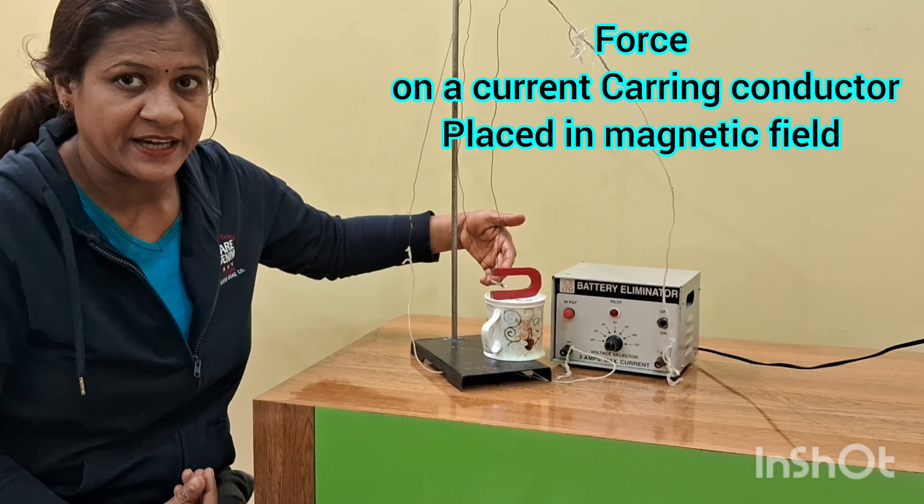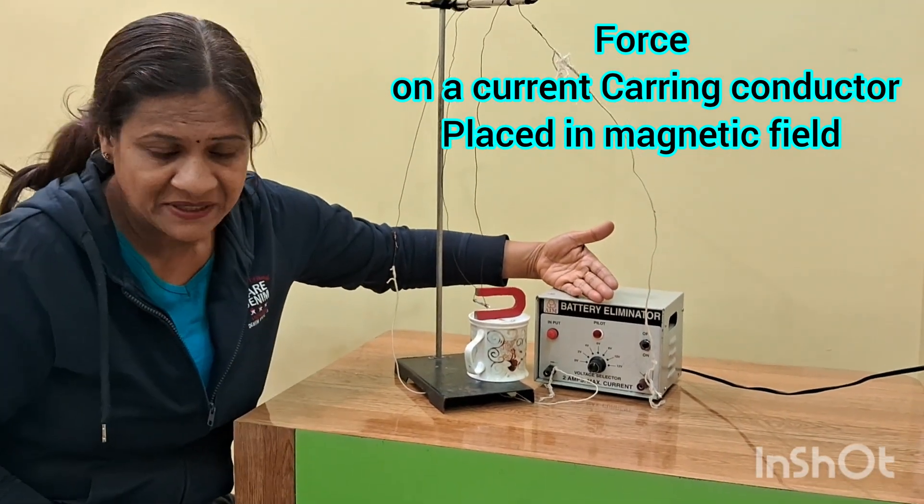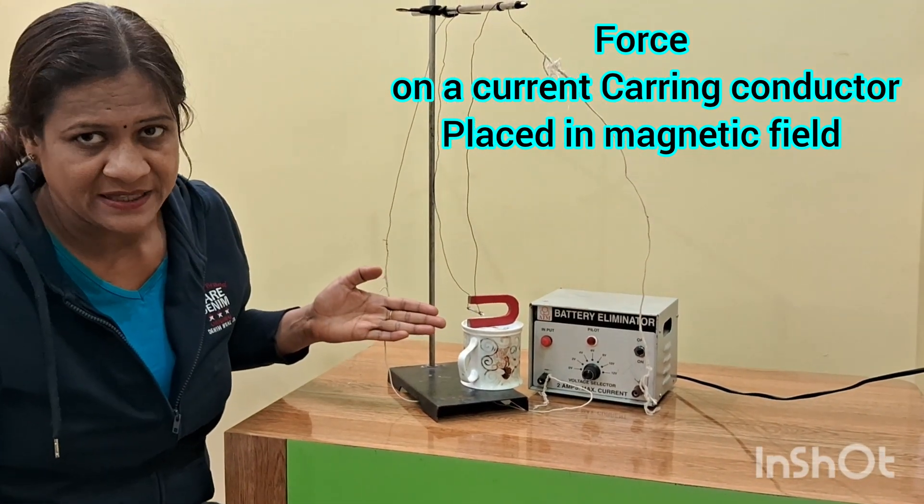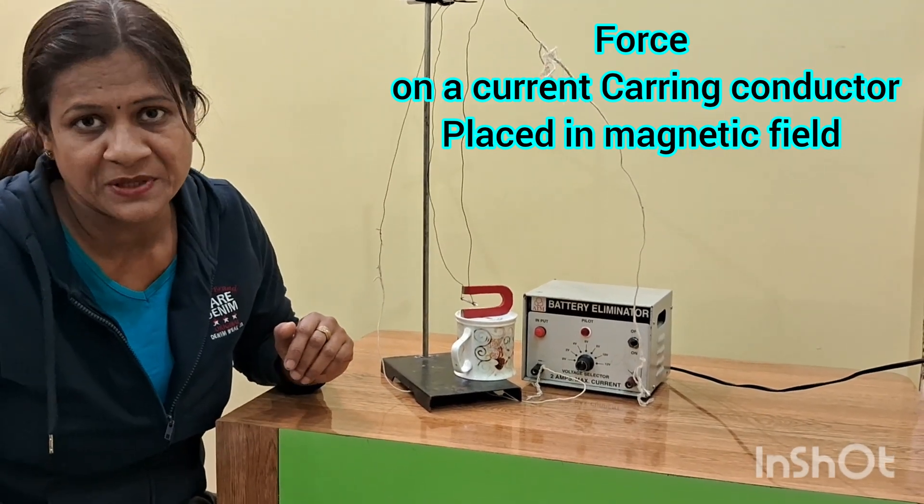This is the current carrying wire, and we have given a supply through the battery eliminator. This is a U-shaped magnet in which the current carrying conductor is placed in between.